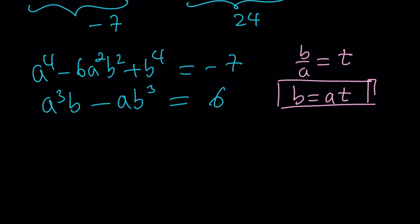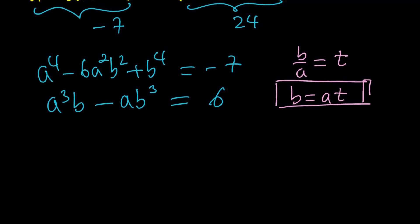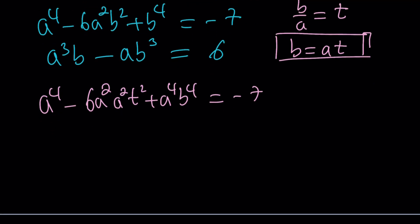Sorry, I had to pause and think about it. But, so A is not 0. Good. And obviously, at the bottom, if A is 0, then 0 equals 6, which is a contradiction. So if you replace B with A, T, you're going to get A squared, T squared, and then A to the fourth. Let's go ahead and simplify this first, and then we'll do the second one.